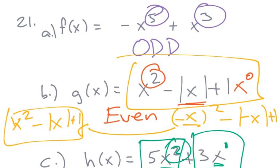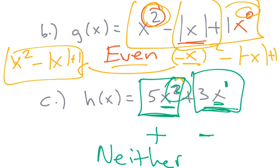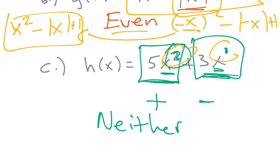Again, I think the easiest way is if all the exponents are odd, it's odd. If they're all even, remember the absolute value function is even, then it's even. And if you have odd and even, it's neither. Hopefully that makes sense. We'll see you in the next video.